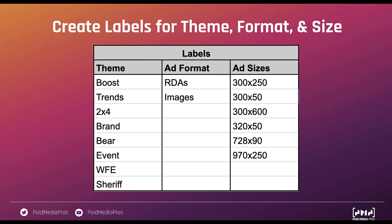What I like to do to make analyzing my display ad copy tests easier is to create a label associated with each of these different pieces. So I might have a label for the theme, and for some ads it'll say boost, others it'll say trends, all the way down the line. It might be easiest if you include the word theme at the beginning of the label — so it'll say theme-boost, theme-bear, whatever makes the most sense. For ad sizes, just label it 300 by 250 or 728 by 90. Although you can filter by ad format in the ad interface, I still like to put labels for RDAs versus image ads versus HTML5, because more often than not I'm going to be in the label report within Google Ads, and it's easiest to use the same tool rather than switching between interfaces.